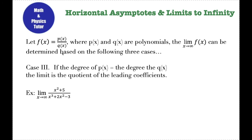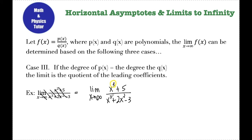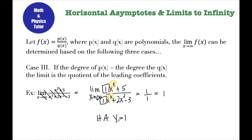Let's look at the third and final case: if the degree of the numerator is equal to the degree of the denominator. The example here isn't great, so we're going to cross that out and use: the limit as x approaches infinity of x cubed plus five over x cubed plus two x squared minus three. I can see that the degree of the numerator is equal to the degree of the denominator — they both have a degree of three. If that's the case, then the limit of this function is going to be the quotient of the leading coefficients — the numbers in front of those variables. Since there's no number written, I know that's really a one, so my limit here is one over one, or just one. This limit also gives me my horizontal asymptote: y equals one.